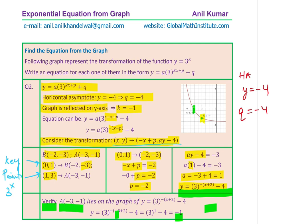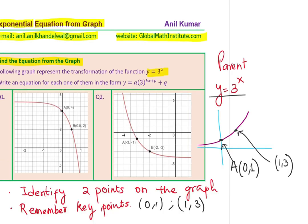That is how you can write the exponential equation from the graph. I hope the steps are absolutely clear. It is important to focus on two things: number one, transformations, and number two, key points. They help you to find the equation from the graph. I hope that really helps you to understand a simple method of finding the equation from a given graph. Feel free to write your suggestions. Thanks for your time and all the best.